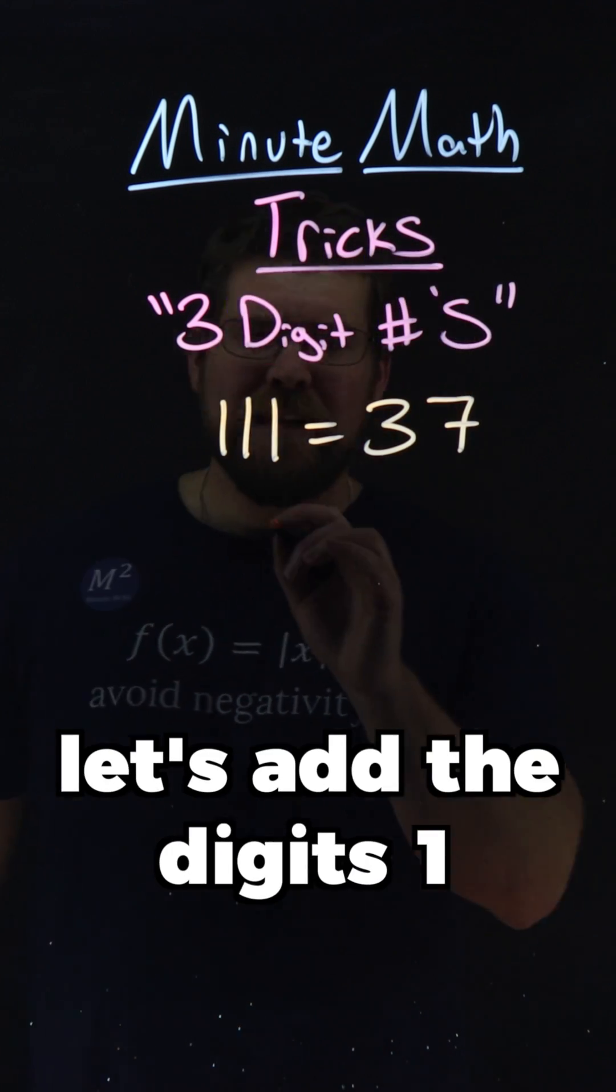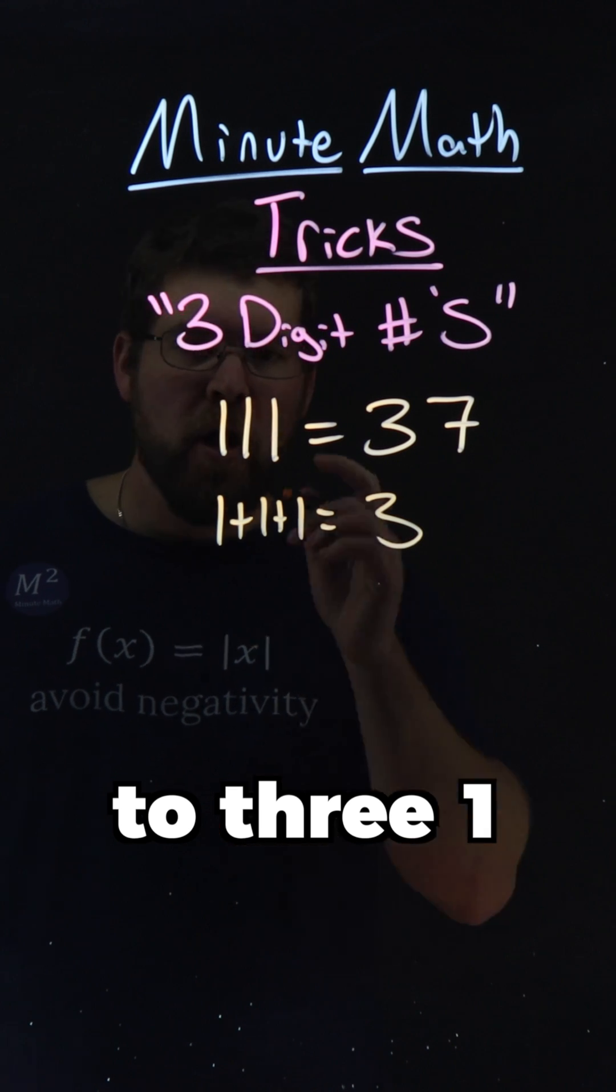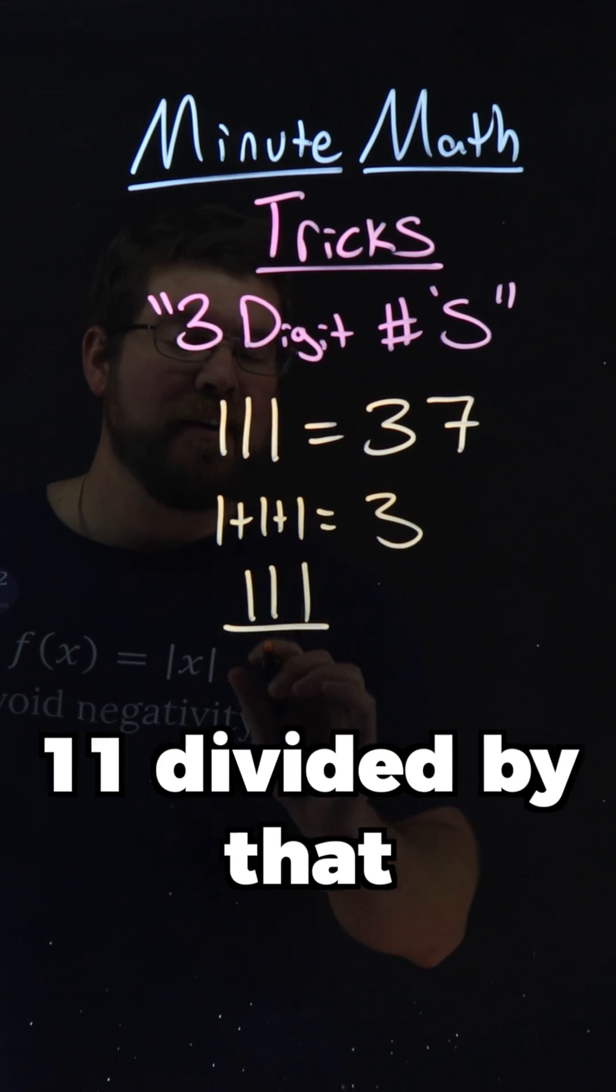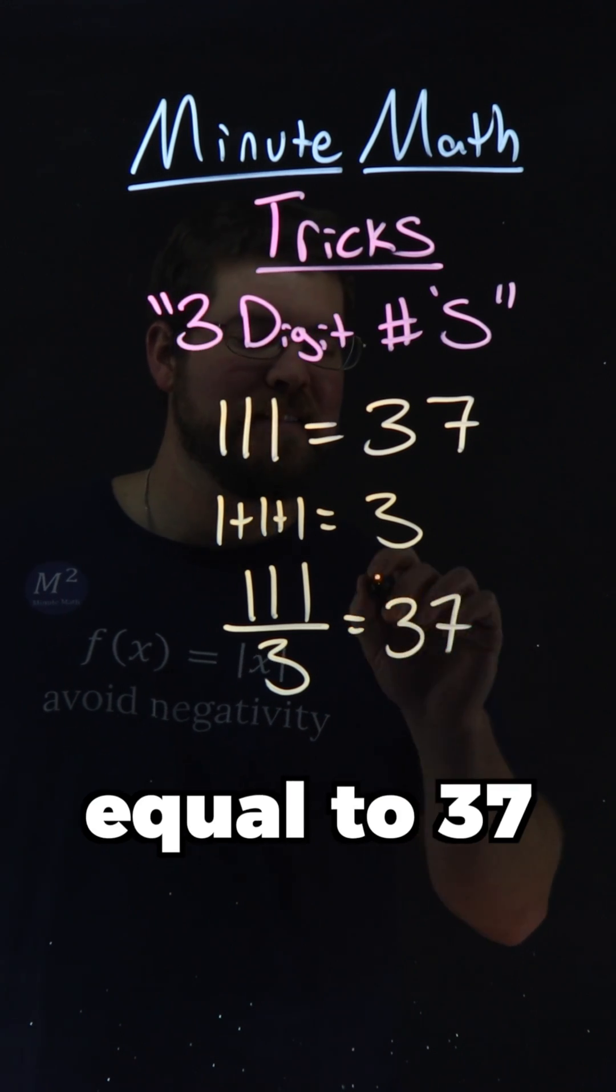111. Let's add the digits. 1 plus 1 plus 1 is equal to 3. 111 divided by that number 3 is equal to 37.